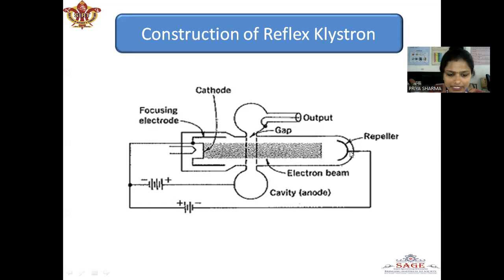This is the repeller electrode which is at high negative potential. The electrons never reach this repeller because of the negative field and are returned back towards the gap.